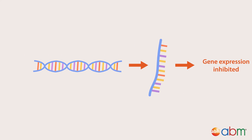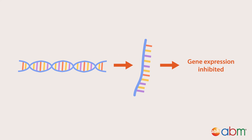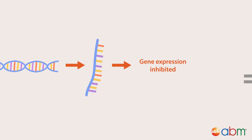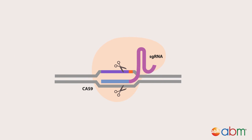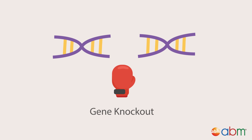MiRNA or SHRNAs can also act to inhibit gene expression, or through CRISPR-Cas9 for gene editing, which can lead to a knockout to disrupt expression of a certain gene.